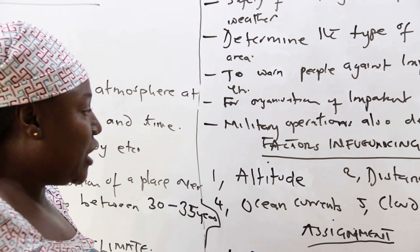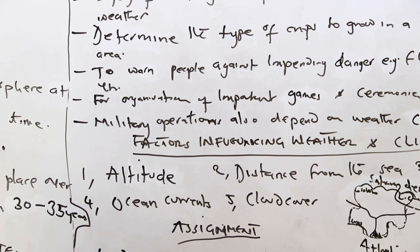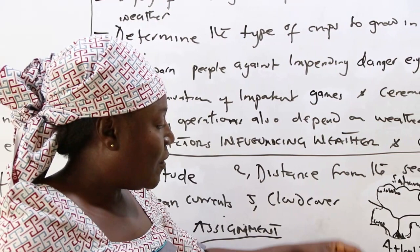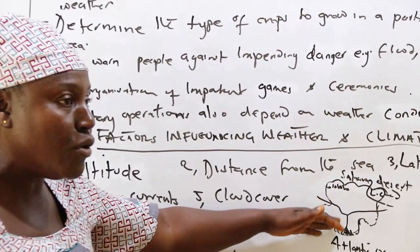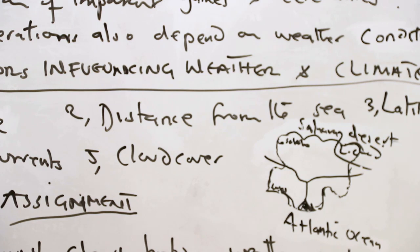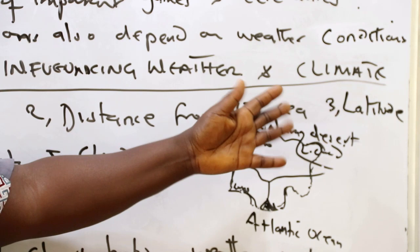The second factor is distance from the sea — how close or how far away you are from the sea. Areas found closer to the sea, like the southern parts of Nigeria — places like Lagos, Port Harcourt, Delta — are found closer to the sea than areas in the northern parts of Nigeria.